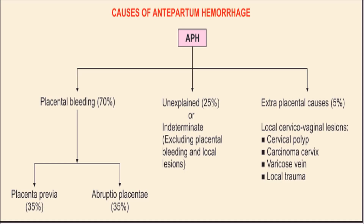The causes of antepartum hemorrhage can be divided into placental bleeding, which occurs in 70 percent of cases, 25 percent of cases are unexplained or indeterminate, and five percent are placental bleeding.